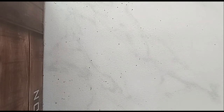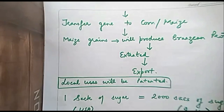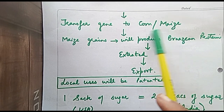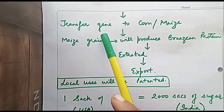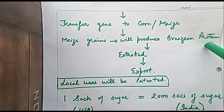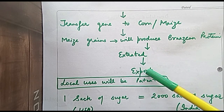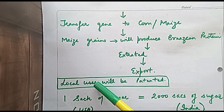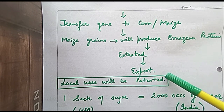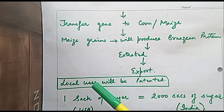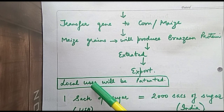What did the US do? The US determined the sweetness of this brazzein protein and put a patent on the protein. They then transferred the brazzein gene to corn and maize so that brazzein protein would be produced in those crops. As a result, local people would no longer be able to use this protein free of cost — they would have to pay for it.